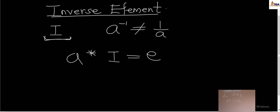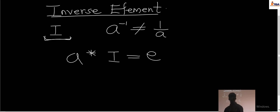To get the inverse element, we must already have the identity element. That is the required procedure — we must first deal with the identity element and get its value, before moving on to find the inverse element. That is the basics of what the inverse element is all about.